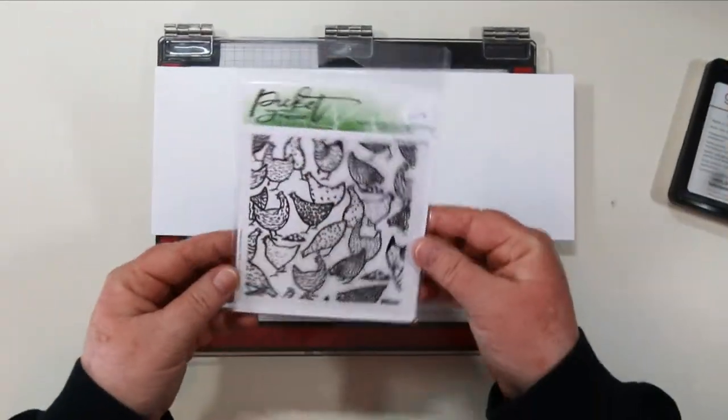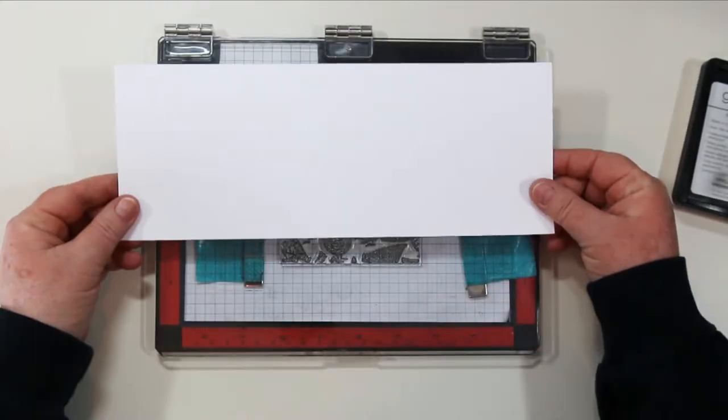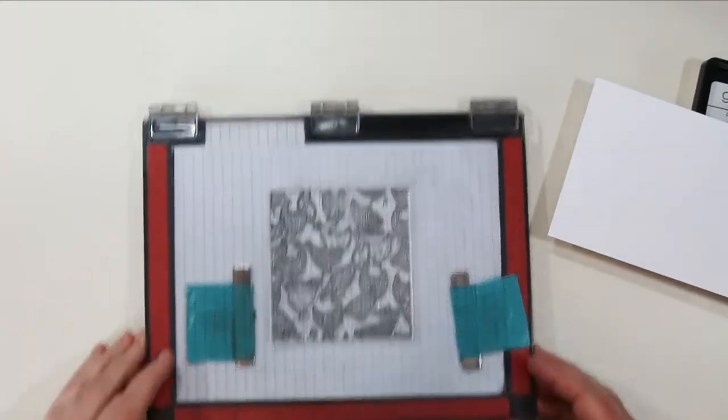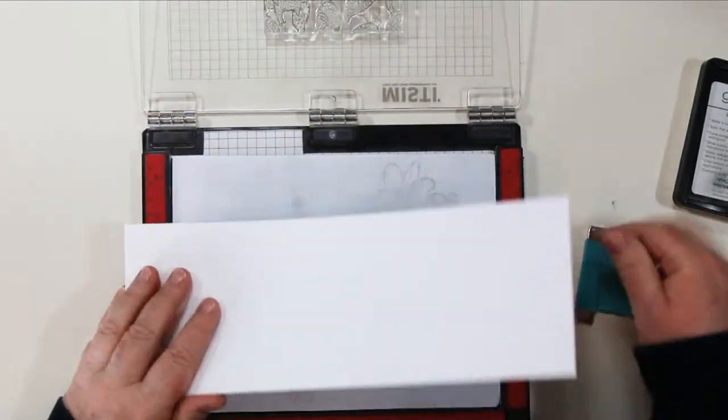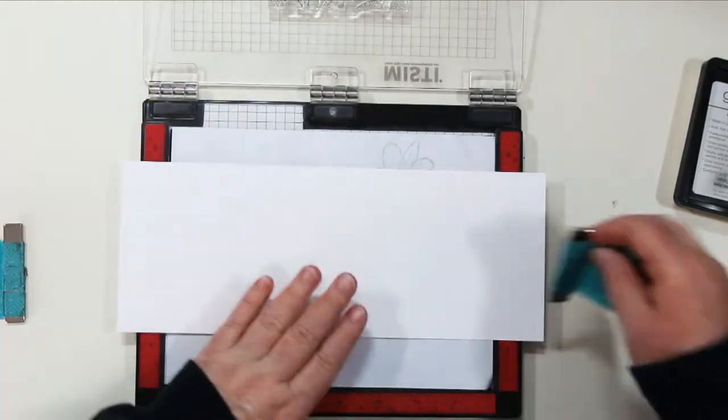First up this fun new More Hot Chicks stamp that you can line up and repeat stamp vertically or horizontally. I'm going to use my MISTI and show you how to do this horizontally to create a slimline card.